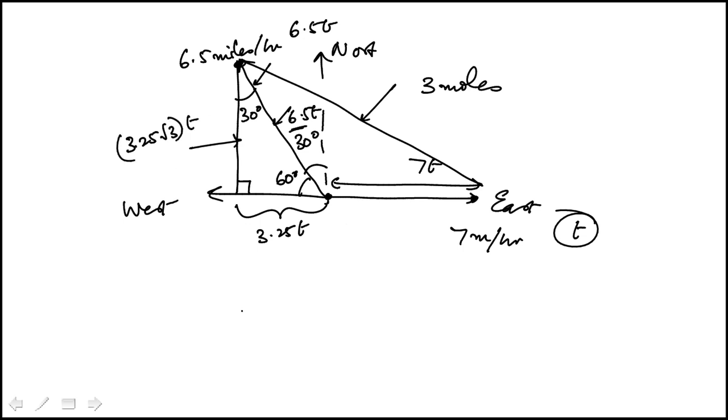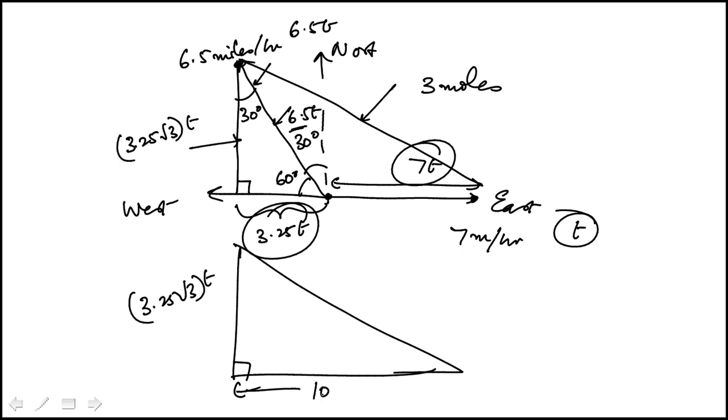Now if I look at this larger right triangle, this is 3.25 times root 3t. The base here is 3.25 plus 7t, which is 10.25t. And I want the hypotenuse to be 3. So now I can apply the Pythagorean theorem.